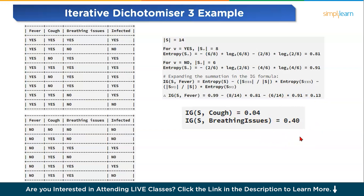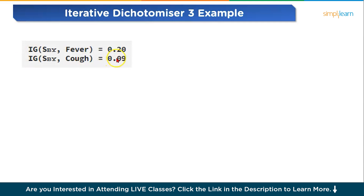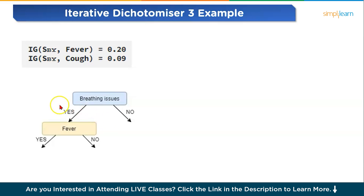Now we calculate the information gain for fever and cough using the subset where breathing issues is yes. For fever it is 0.20 and for cough it is 0.09. Since the information gain of fever is greater than cough, fever is selected as the left branch of the breathing issues node. For the right branch, with only one unused feature remaining, cough automatically becomes the right branch of the root node. So our tree now has fever on the left and cough on the right.